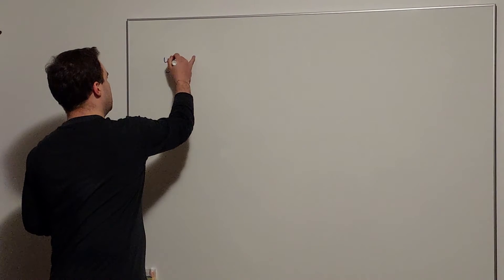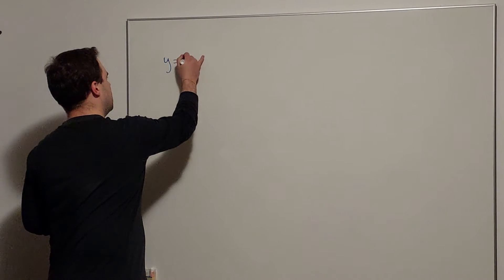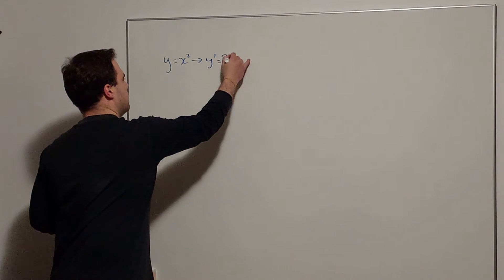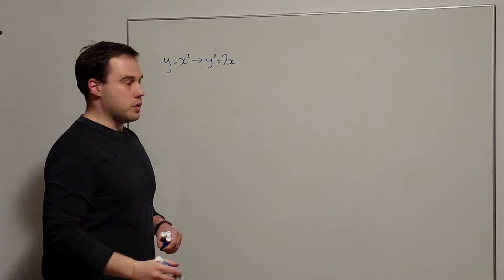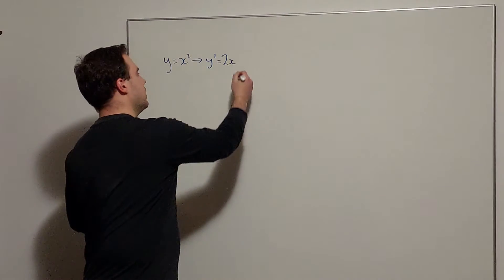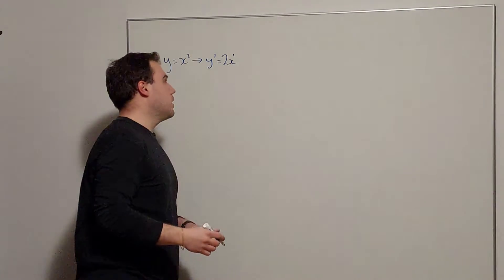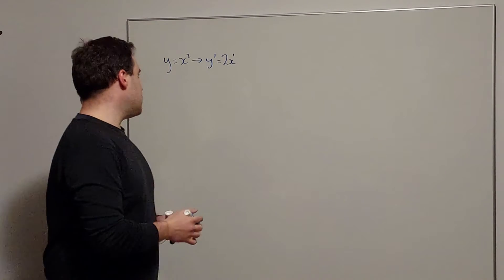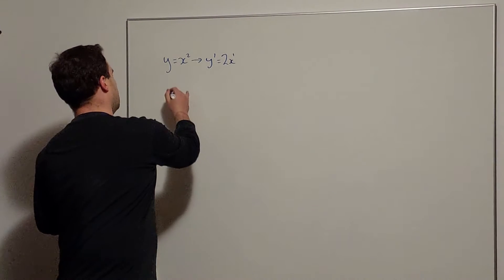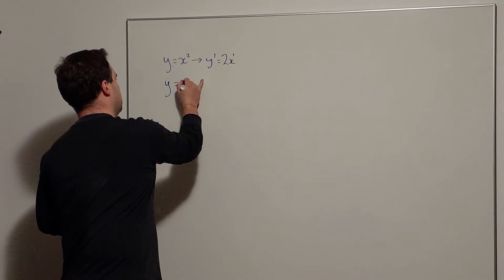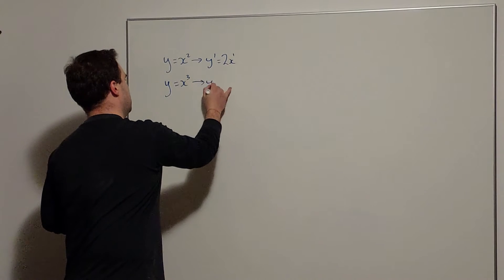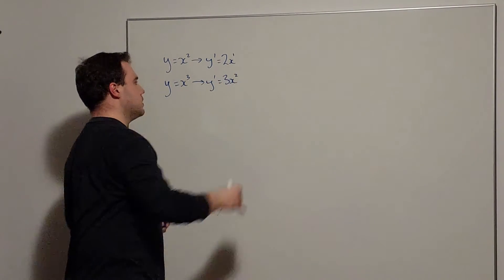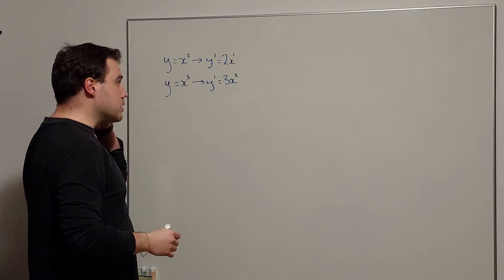We had that when y equals x squared, if I'm differentiating that, we got y equals 2x — and I'm just going to write that as 2x to the power of 1, since x to the power of 1 is still x. We also did y equals x cubed, which differentiated to give us 3x squared.